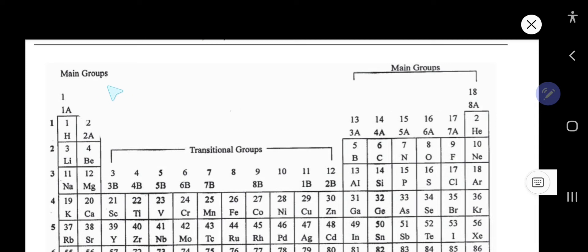For main group elements, valence electrons equal the group number. Carbon is an element of the main groups—that is, groups 1, 2, and 13 to 18 are the main groups.